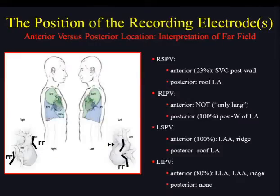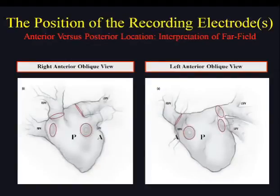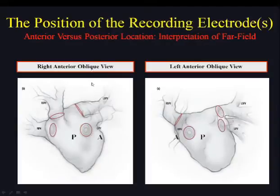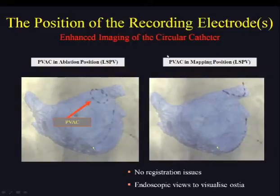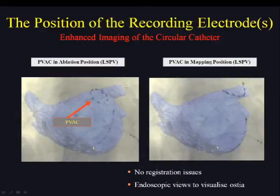Knowing the position is important during a PVAC case. You should use intracardiac echo, enhanced fluoroscopy, or know your fluoroscopic views. In the right anterior oblique view, you have a nice anteroposterior orientation of the left inferior pulmonary vein. The LAO view is especially useful to assess the posterior and anterior part of the right inferior pulmonary vein. You can also use 3D rotational angio, which allows you to appreciate the PVAC in a proximal ablation position or a more distal mapping position.